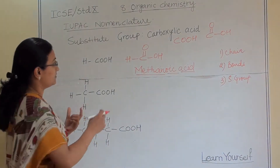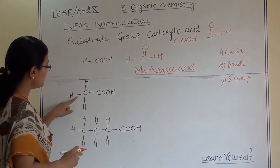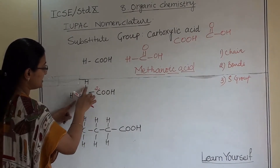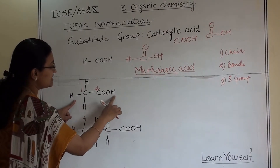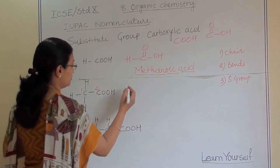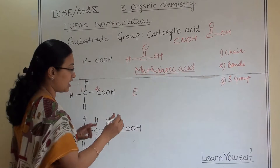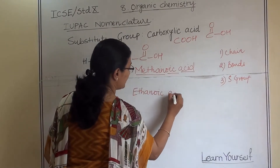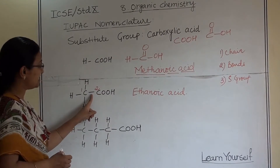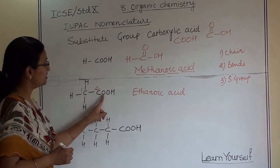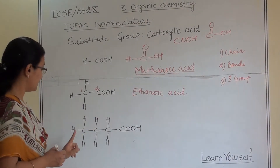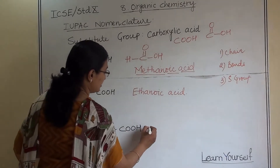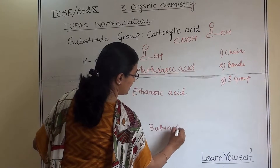The second structure has two carbon atoms — one with three hydrogens and one with the COOH substitute group. Since there are two carbon atoms, the name is ethanoic acid. In the third structure, there are four carbon atoms total — three CH groups plus the carbon in COOH — so the name is butanoic acid.